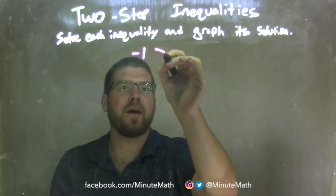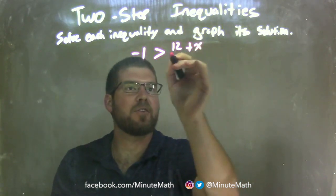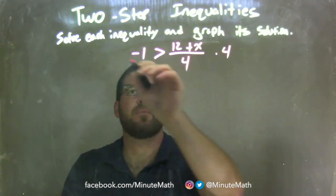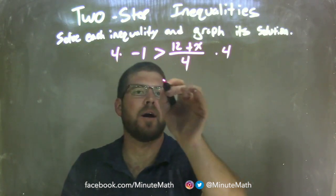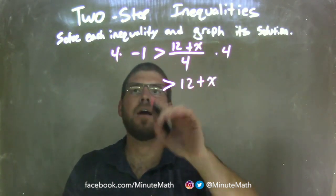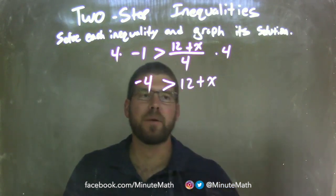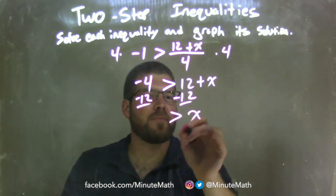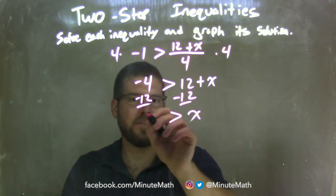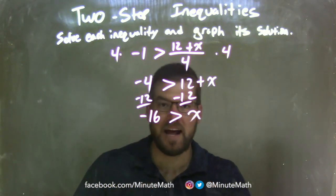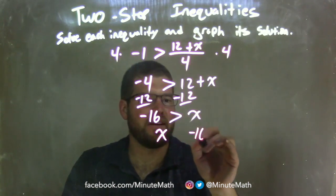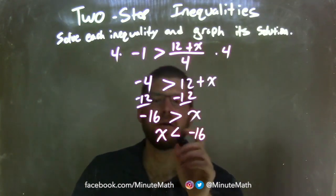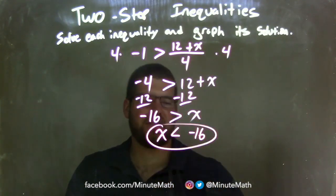Negative 1 is greater than 12 plus x, over 4. My first step: multiply both sides by 4. That eliminates the 4 on the right, giving me just 12 plus x as the numerator, and on the left 4 times negative 1 is negative 4. Now I subtract 12 from both sides, leaving x by itself on the right, and negative 4 minus 12 is negative 16. Rewriting with x first: x is less than negative 16. Remember, we flip the inequality when rewriting. So x is less than negative 16.